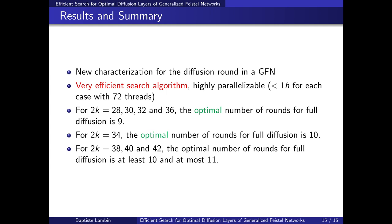There are still open questions: can we reach full diffusion in 10 rounds for those remaining cases? And can we extend results to even more blocks? With our current algorithm, extending further becomes very computationally expensive. Thanks for listening, and if you have questions you can ask them on the Zulip chat. See you during the live talks of FSC 2020.